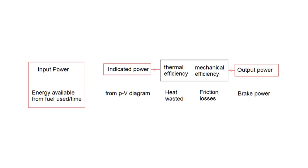Here is a summary diagram for this video on efficiency. Efficiency is output divided by input, and that is usually a fraction because you don't get more energy out than you put in. Multiplying by 100 gives you it as a percentage. In the case of a petrol or diesel engine, the input power comes from the fuel — the energy available from the fuel divided by time. The output power, another name for that is the brake power, and that's the power available at the crankshaft — the part that turns in the middle of the engine.